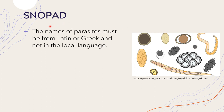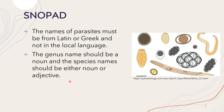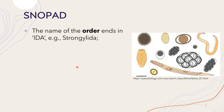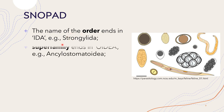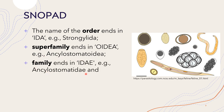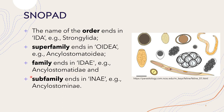According to SNOPAD, the names of parasites must be derived from Latin or Greek, not the local language. The genus name should be a noun and the species name should be either a noun or an adjective. The name of the order ends in -ida; for example, Strongylida. The name of the superfamily ends in -oidea; for example, Ancylostomatoidea. The name of the family or subfamily ends in -inae; for example, Ancylostomatidae.